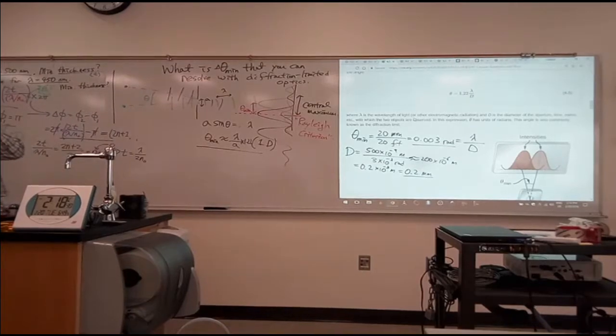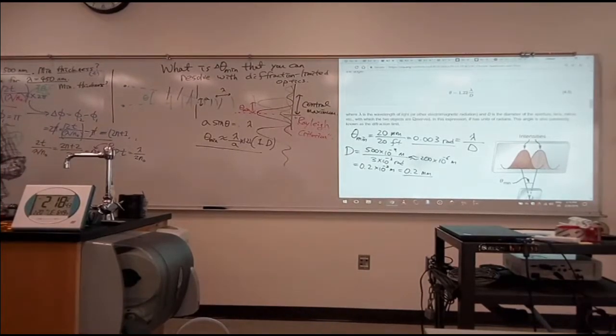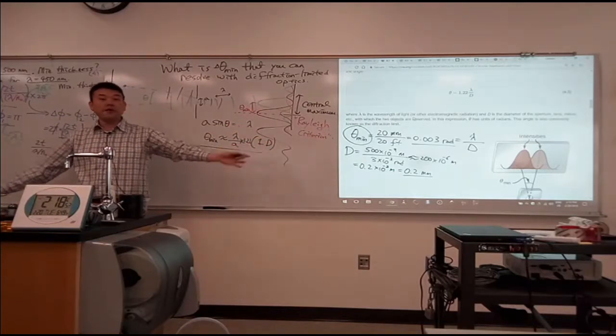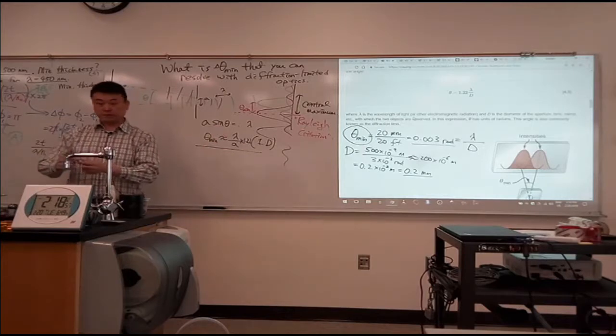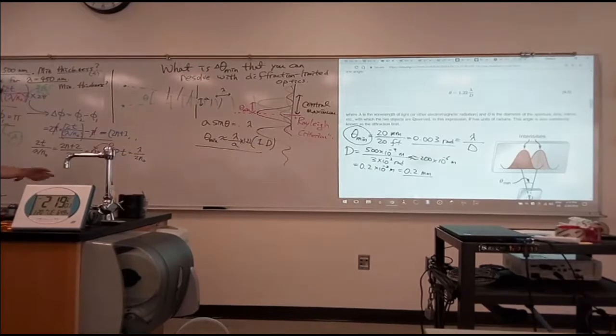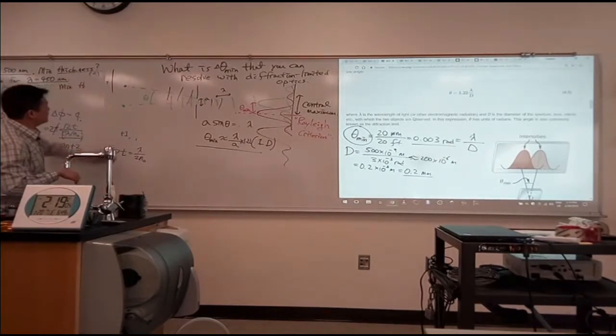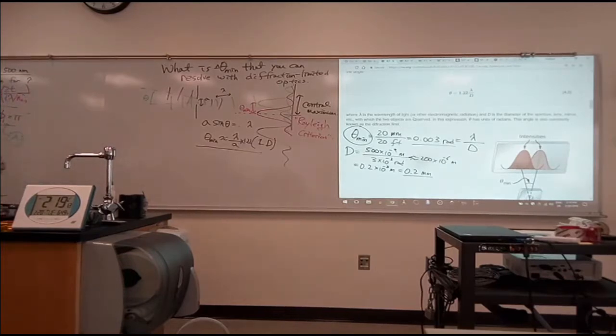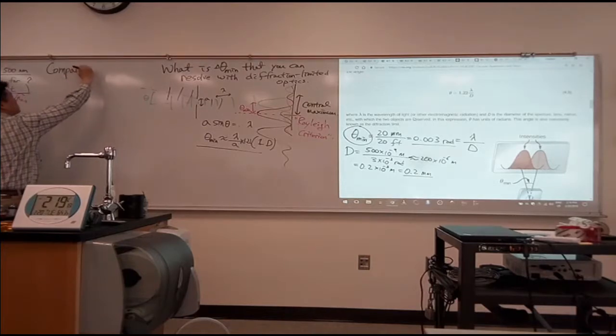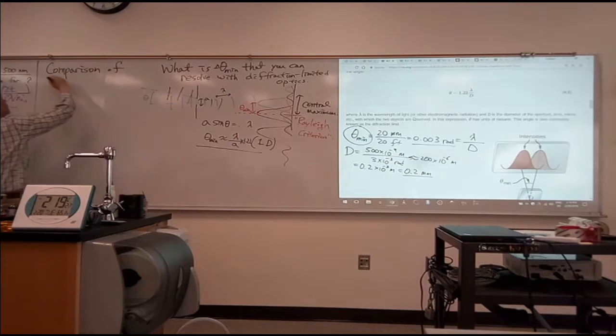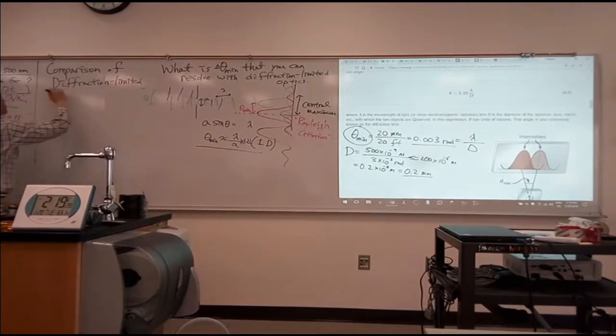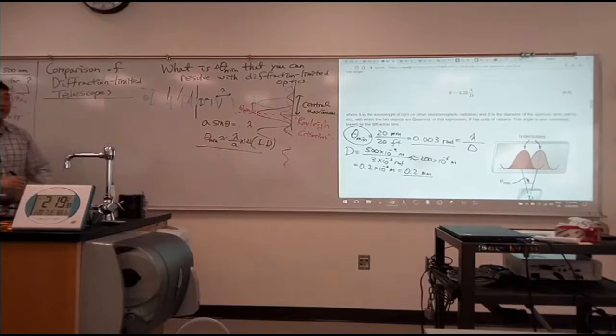The other thing is, let me do two quick comparisons. So I want to do a comparison of this theta minimum for largest known optical telescope. Compare it with a largest known radio telescope. Okay? So let me just set up the space here. So this is the comparison of diffraction limited telescopes. So I'm just going to do the simple one, just lambda over a.